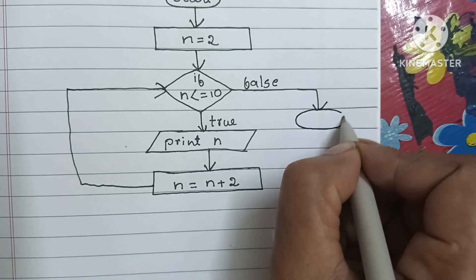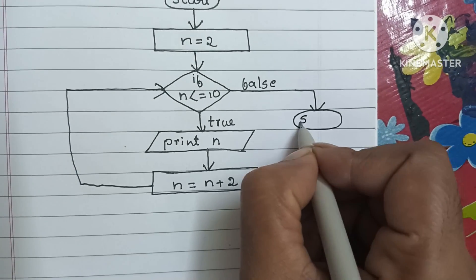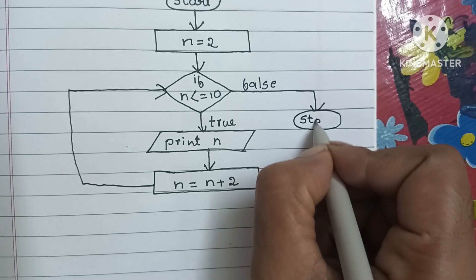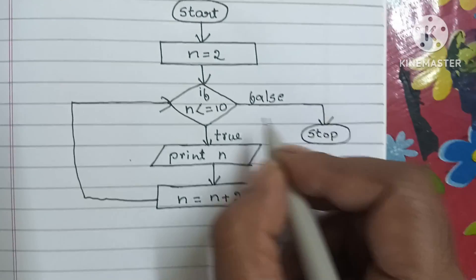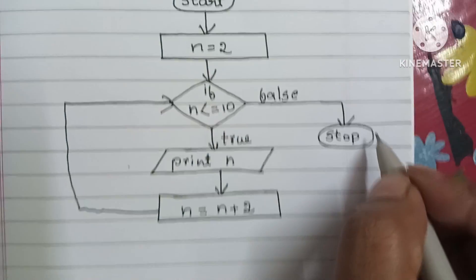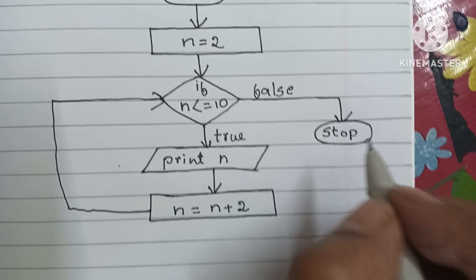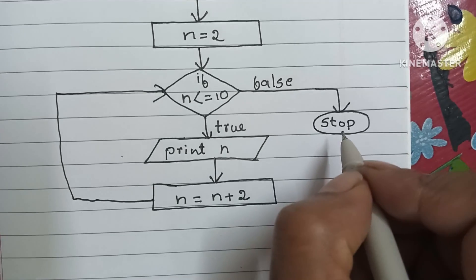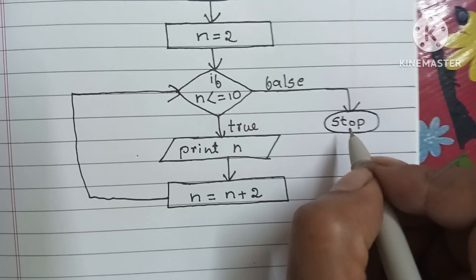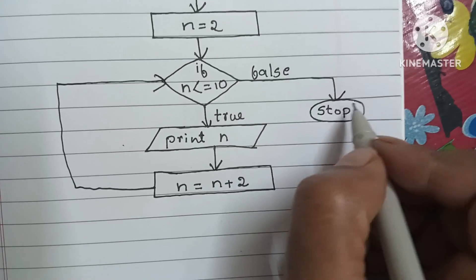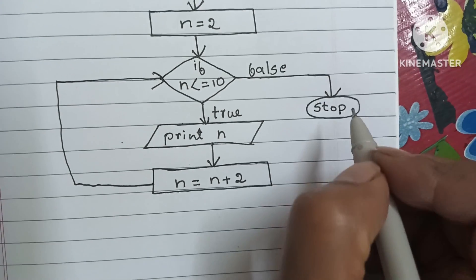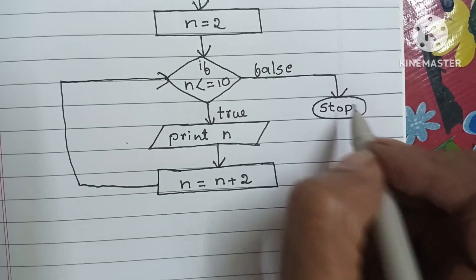Finally, it will stop the flowchart using the stop statement. It executes the stop statement to stop the flowchart. The stop statement is written within an oval shape.